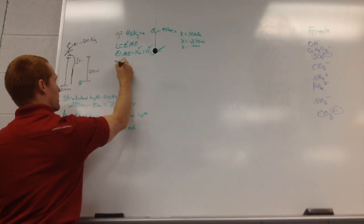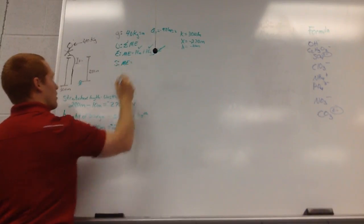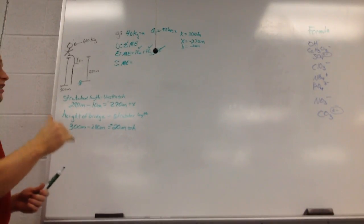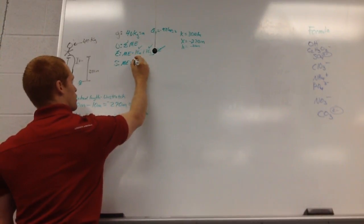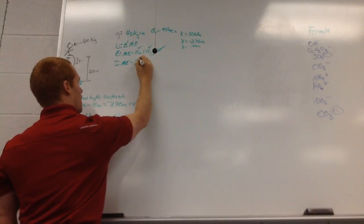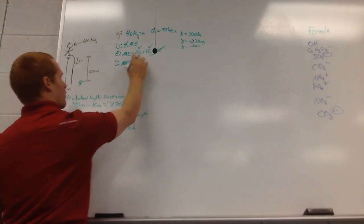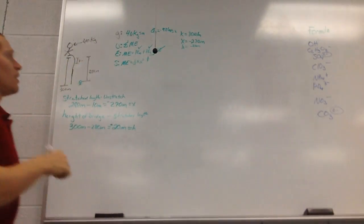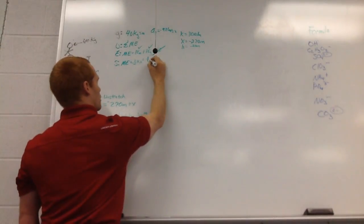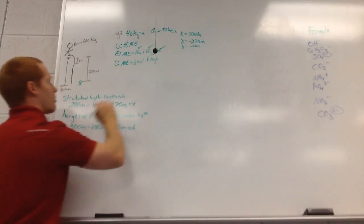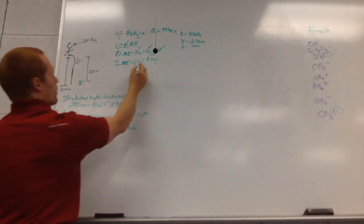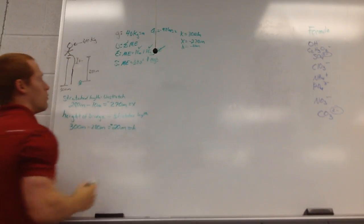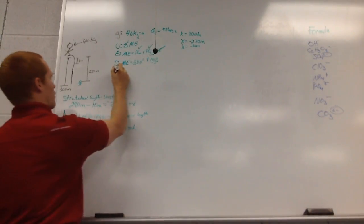Expanding the equation: mechanical energy equals one half kx squared for PE elastic, plus mass times gravity times height for PE gravity. We have the spring constant k, we have x, we have his mass, we have gravity, and we have height — so we can now solve for the mechanical energy.